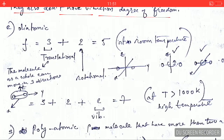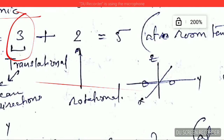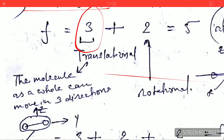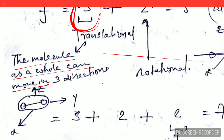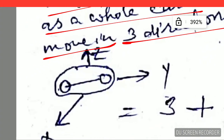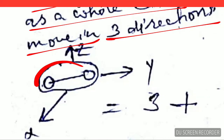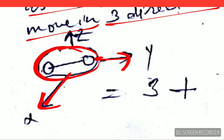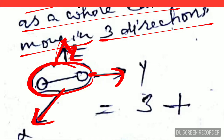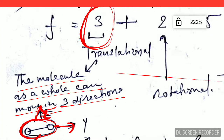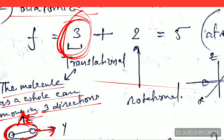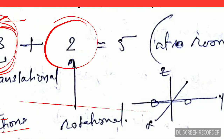Now let's come to the diatomic molecule. In the case of a diatomic molecule, the degree of freedom is the sum of translational degree of freedom, which is three. The molecule as a whole can move in the three directions — X, Y, and Z. So it can translate in three directions, and it can also have two rotational degrees of freedom.